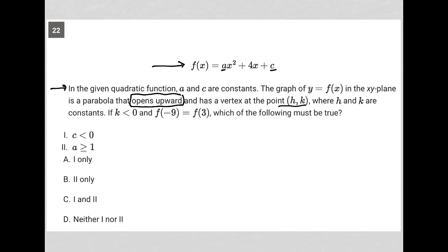But k is less than 0, so that's another bit of identifying information that tells us that the y value - this k value of the vertex - is actually negative since it's less than 0.